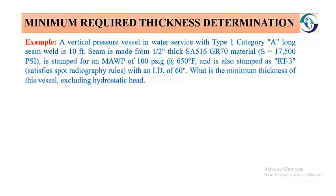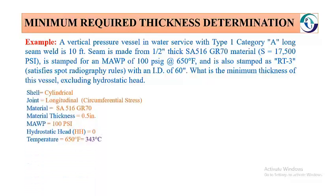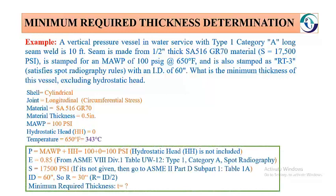The question is: what is the minimum thickness of this vessel excluding the hydrostatic head? From the above data, we extract: the shell is cylindrical, the joint is longitudinal with circumferential tension stress acting, material is SA-516 Grade 70, material thickness is 0.5 inch, maximum allowable working pressure is 100 PSI, hydrostatic head is 0, and temperature is 650°F, which equals 343°C.